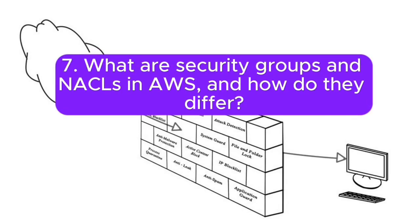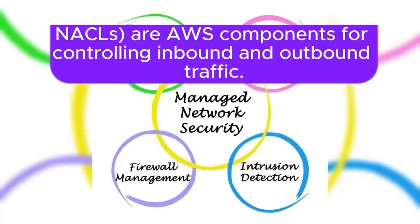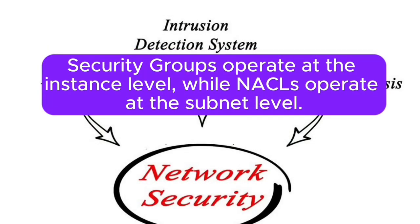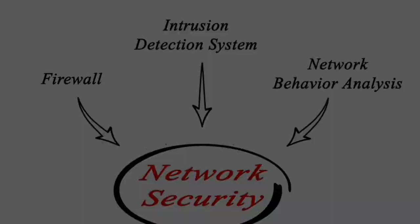7. What are security groups and NACLs in AWS, and how do they differ? Security groups and network access control lists (NACLs) are AWS components for controlling inbound and outbound traffic. Security groups operate at the instance level, while NACLs operate at the subnet level.